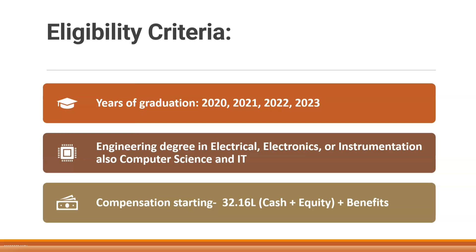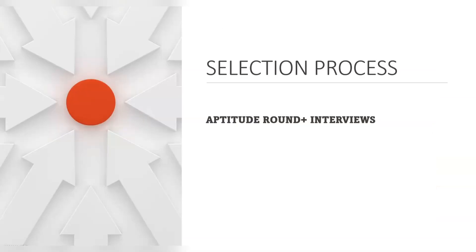One more thing: they generally hire from tier one and tier two colleges in India, but that doesn't mean if you are from another college you have no scope for Texas Instruments. Based on your skill set, your knowledge, and how good you are technically, you can still get placed. So college tier doesn't matter as much as your skills.